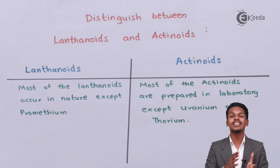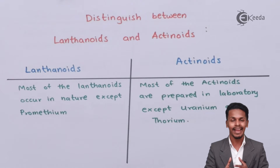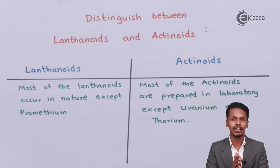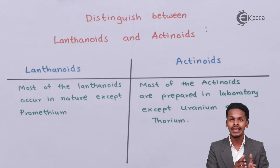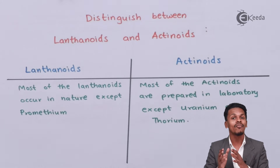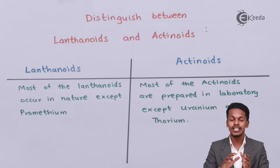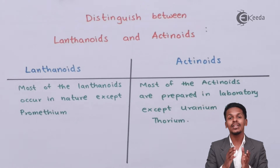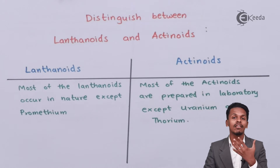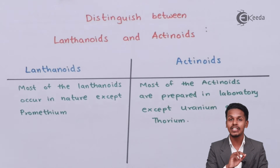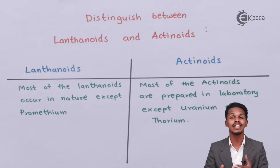We know the basic difference between lanthanoids and actinoids — the differentiating electron enters in the 4f orbital for the lanthanoids and in the 5f orbital for the actinoids. Talking about their position, lanthanoids are present in the 6th period and the 3rd group, while actinoids are present in the 7th period and the 3rd group.